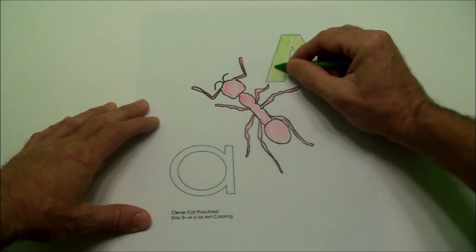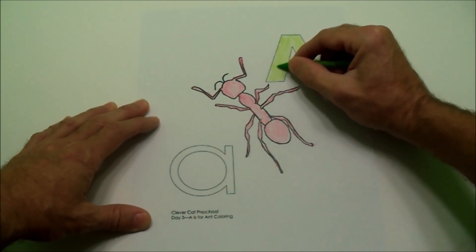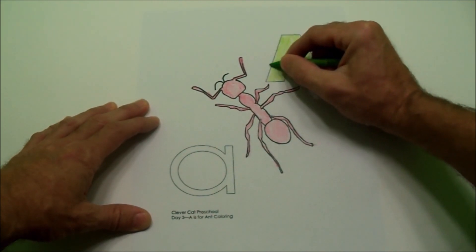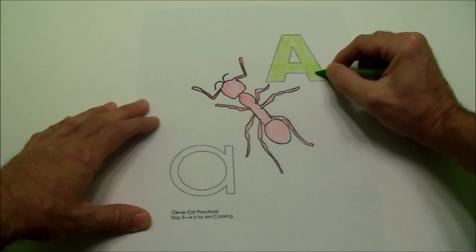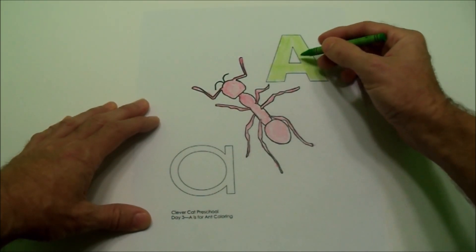The letter A. And then I come across from the left. This is the left. To the right. All the way across. Just like that. And I don't color in the middle. I leave the middle alone.